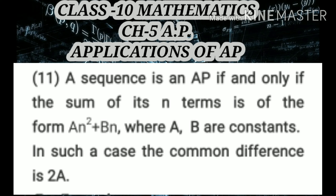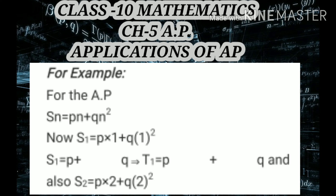To understand this application more clearly, let me take an example. Here is an example: suppose we have an AP whose sum of n terms is S_n = Pn + Qn². We can find the sum of its 1, 2, 3, 4 terms by substituting the value of n as 1, 2, 3, 4, and so on.